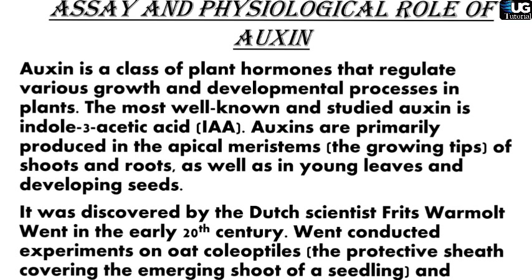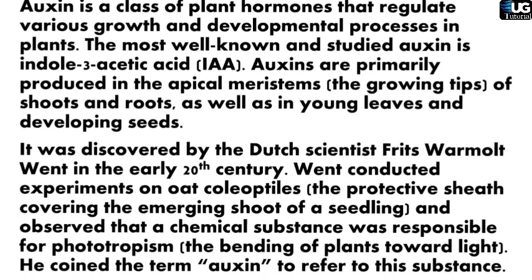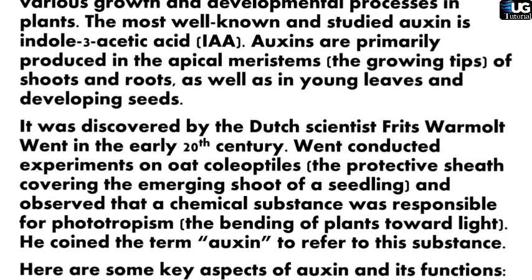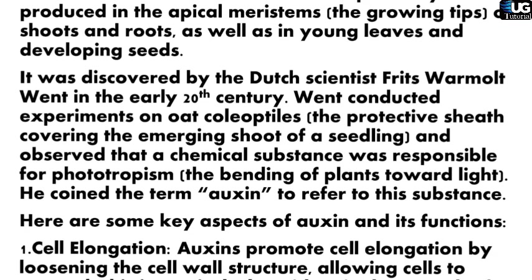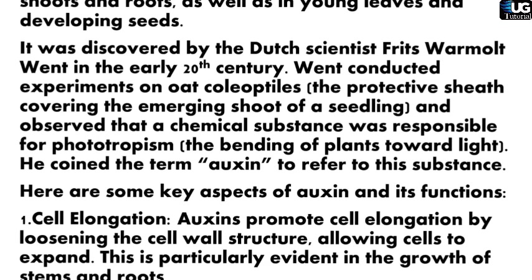Auxins are primarily produced in the apical meristems, the growing tips of shoots and roots, as well as in young leaves and developing seeds. Auxin was discovered by the Dutch scientist Fritz Went in the early 20th century. Went conducted experiments on oat coleoptiles — the protective sheath covering the emerging shoot of a seedling — and observed that a chemical substance was responsible for phototropism, the bending of plants toward light. He coined the term auxin to refer to this substance.